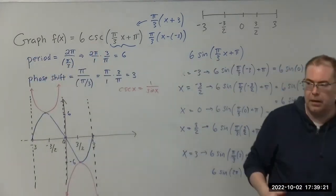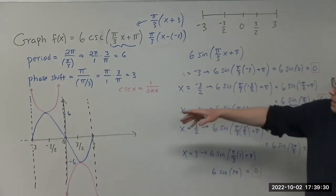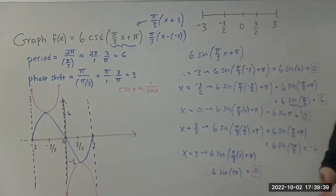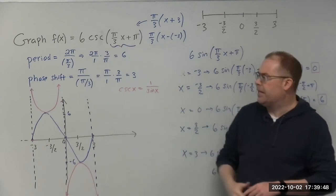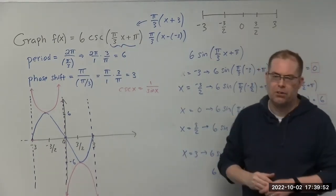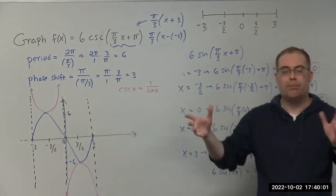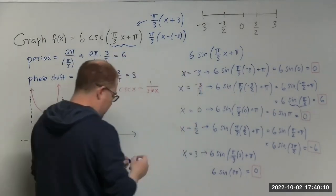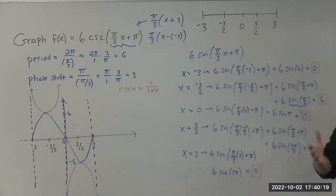So that's the graph in pink for this function over the given period. The key takeaway is that if you plot the sine function first, you can easily come up with a pretty good sketch of the cosecant function. The same approach applies to secant: if you have secant, you graph the cosine counterpart and then take the reciprocal. This is the methodology for problems in section 6.2.